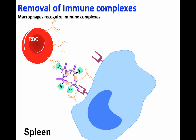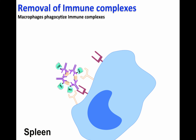Basically, CR1 recognizes C3B and the Fc receptor located on macrophages will recognize the Fc region of the immunoglobulin associated to the immune complex. Macrophages will phagocytose the immune complexes, and the red blood cells will go back to circulation.